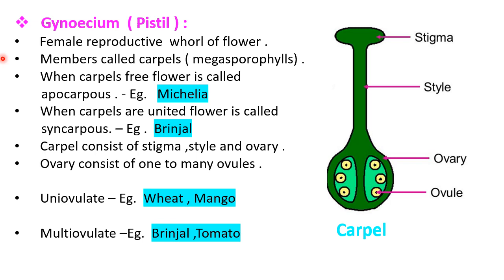In the flower of some plants, ovaries show presence of a single ovule. Such an ovary is called uniovulate. Examples are wheat and mango. In some plants, the flowers show presence of many ovules inside the ovary. Such an ovary is called multiovulate. Examples are brinjal and tomato.